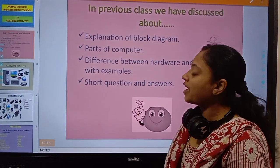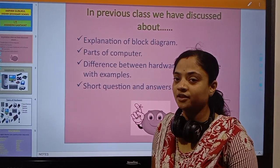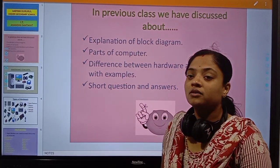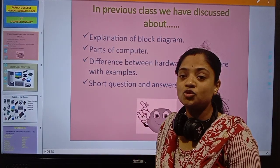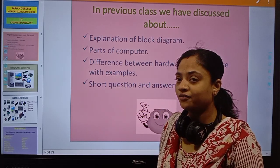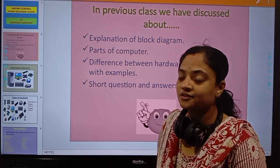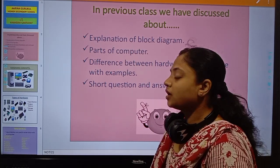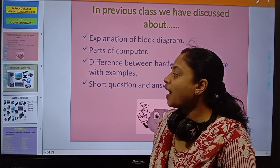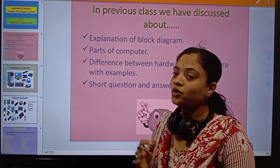In the previous class we discussed the block diagram, explaining how data flows through different parts of the computer. There are two types of parts that are hardware and software, and we discussed the differences with examples.